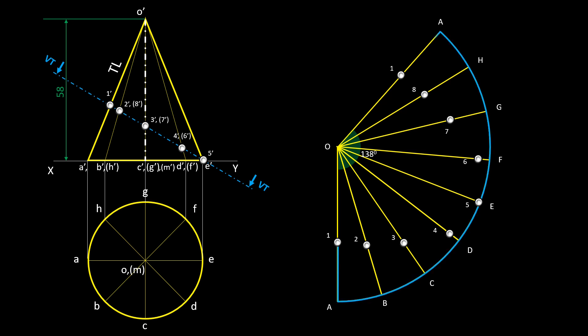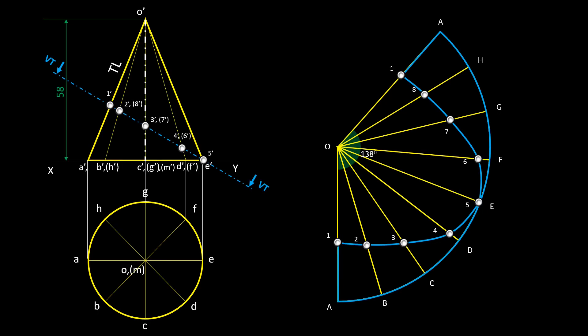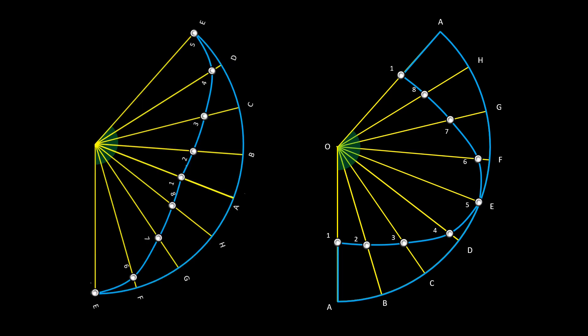Join the points with curved lines, because the base of the solid is a circle — which is applicable for cones, cylinders, and any solid with a curved base. We can also start developing the solid from generator OE, because OE is the shortest generator after the section. If the development starts with OE, then the pattern will appear like this. Both approaches are possible.